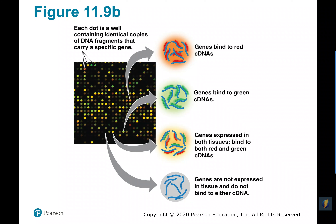This is a microarray. Essentially, each dot in the microarray has identical copies of a DNA carrying a specific gene. You can then see which genes bind to the red, which bind to the green, and which get expressed in both. Where it's black, the gene is not being expressed, so it doesn't bind to either part of the microarray. You can determine which cells have gene expression and which do not by looking at the microarray.